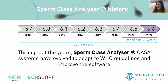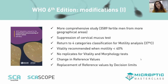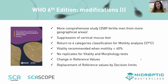Each new version of our device software includes improvements such as new automatic modules for analysis, interface modifications to make the software more user-friendly, and other improvements. Besides, the Sperm Class Analyzer systems have evolved to always adapt to the current WHO manual. Next, I am going to discuss briefly the different news in the WHO 6th edition manual, and then explain how we have implemented these updates in our systems.